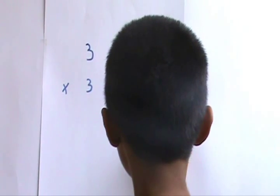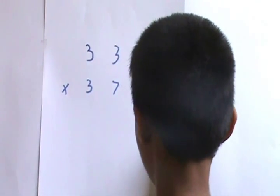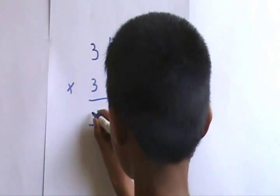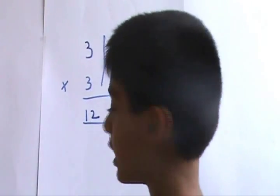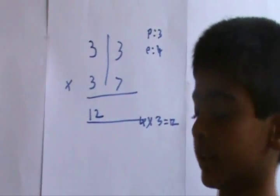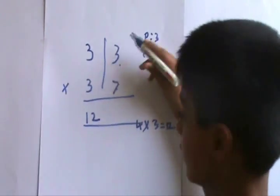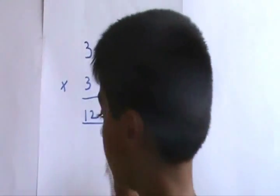So 4 x 3 will be 12. So this part 12 will be one part of your answer. The next step is to multiply 7 and 3 which will be 21.